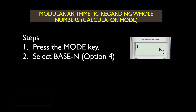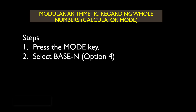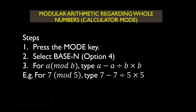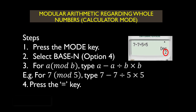The result of all computations will be displayed below the DEC writing. For A mod B, simply type A minus A divided by B times B. For example, for 7 mod 5, type 7 minus 7 divided by 5 times 5, then press the equal key. This gives you 2. Try dividing 7 by 5 — the remainder is indeed 2.